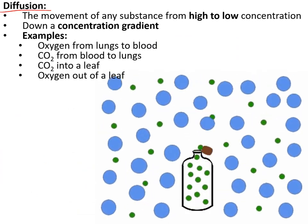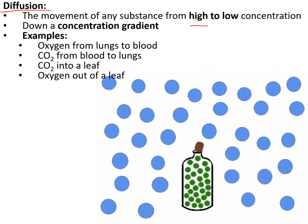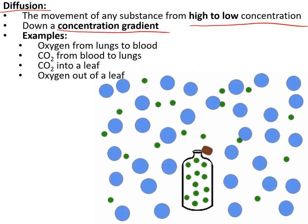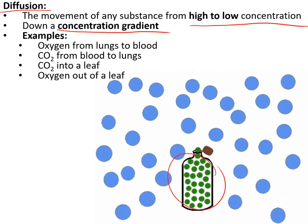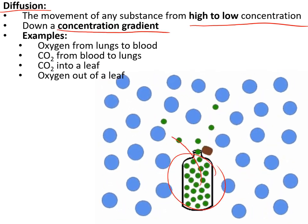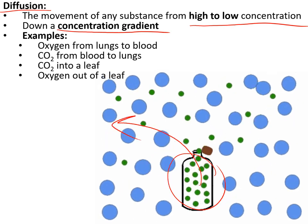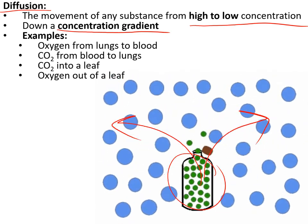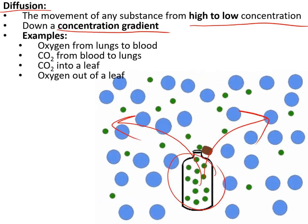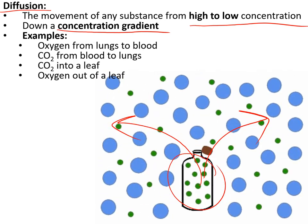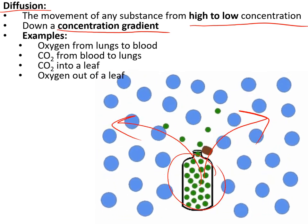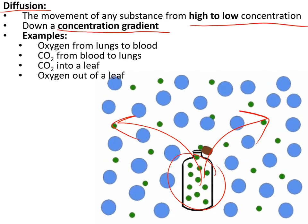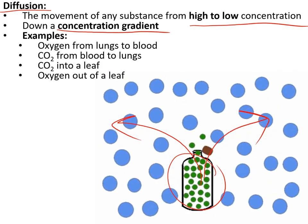Diffusion is how most substances move in and out of cells — from high concentration to low concentration, down a concentration gradient. This is how oxygen goes from the lungs to the blood and carbon dioxide goes from the blood to the lungs. It's also how carbon dioxide goes from the air into the leaf and how oxygen goes from the leaf back out into the air.